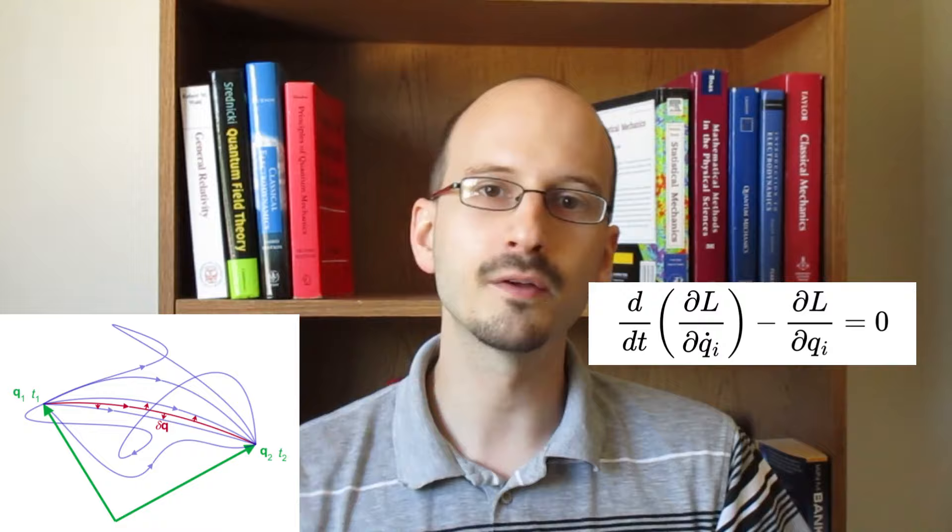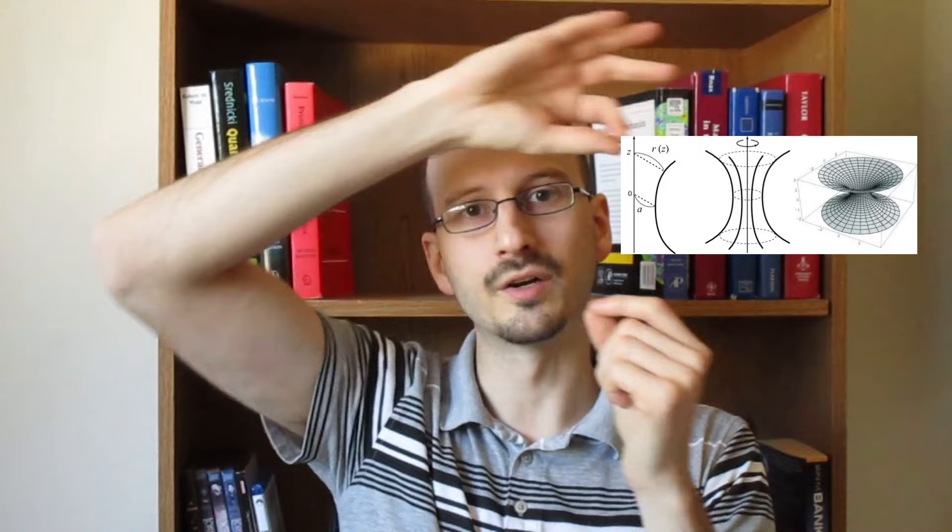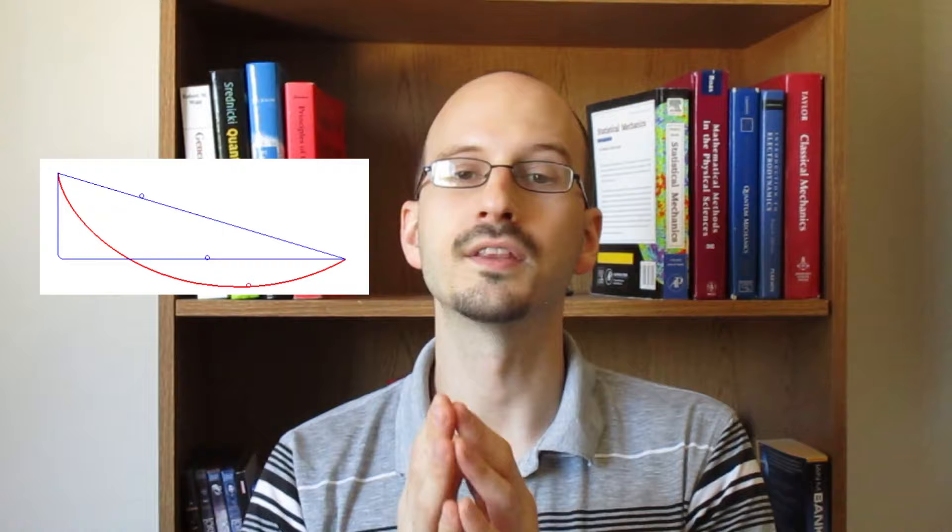The chapter then takes a detour away from physics into the land of pure math, with three examples of how to use this math to solve geometry problems. The first example takes two points and uses calculus of variations to find the shortest distance between them, which, surprise surprise, is a straight line. The second example says what if we take two points in 3D space and we draw some line between them, such that if we revolve that line around the axis, the surface area is minimized. The curve that ends up being the correct solution is called a catenary. And the third example is assuming gravity on the Earth's surface, what shape does something have to slide down between two points in order for the time to be minimized? And the solutions to this problem are brachistochrones.